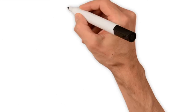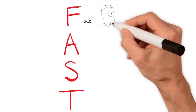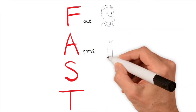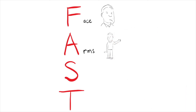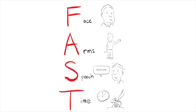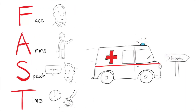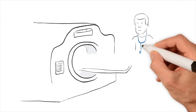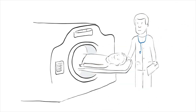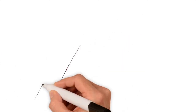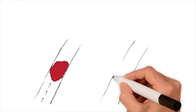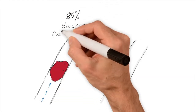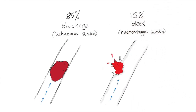Remember, you need to get help fast. F is for face — is there face drooping on one side? A is for arms — is there weakness in the arms? S is for speech — is their speech slurred? T is for time — if you spot any one of these signs, it's time to call an ambulance. Once the ambulance arrives at the hospital, a doctor will assess you and arrange an urgent scan, which shows where the brain is damaged and what type of stroke has happened. Strokes are put into two groups depending on the blood vessel problem — a blockage, called an ischemic stroke, or a bleed, called a hemorrhagic stroke.